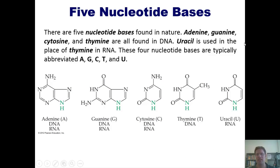So there are five nucleotide bases found in nature. These five nucleotide bases are adenine, guanine, cytosine, thiamine, and uracil, all pictured right here. Now, adenine, guanine, cytosine, and thiamine are all found in DNA, while uracil is used in the place of thiamine in RNA. These four nucleotide bases are typically abbreviated as A, G, C, T, and U, respectively.